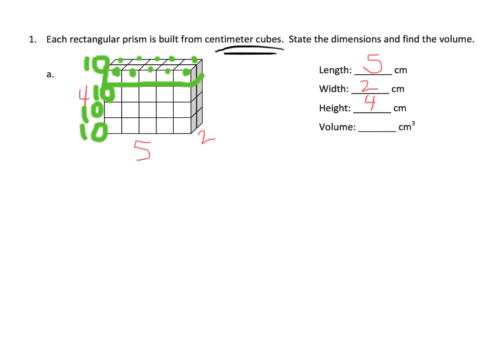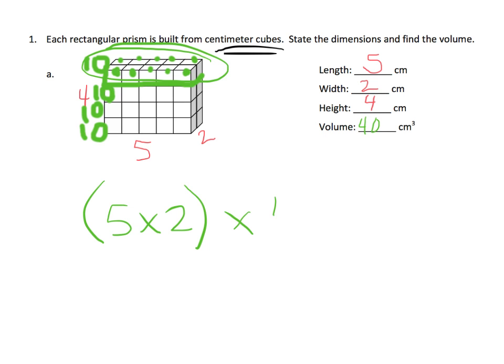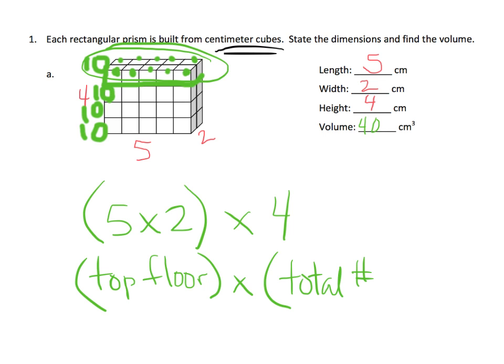That's pretty straightforward — our volume is 40. Now, teachers, here is where we're going to start guiding our students towards that algorithm. How did we get 10? We got the 10 up at the top. A nice shortcut, rather than counting all 10 of them, would be to do 5 times 2 — that gave us the top floor. Then we multiply by 4, because that's how many floors there were altogether. So you could think of this as the top floor times the total number of floors.